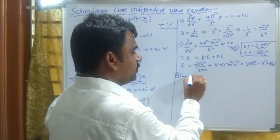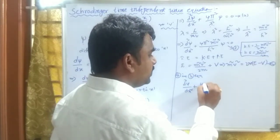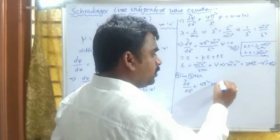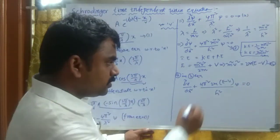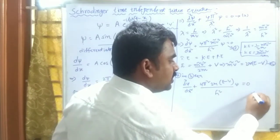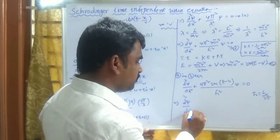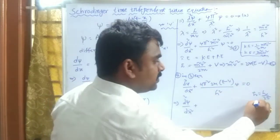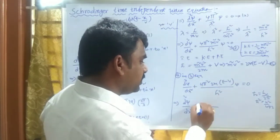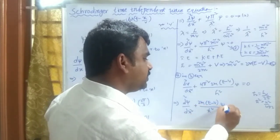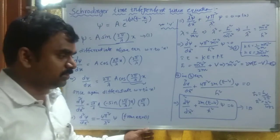Substituting Equation 4 into Equation 3: d²ψ/dx² + (4π²/h²)·2m(E − V)·ψ = 0. Using ħ = h/(2π), so ħ² = h²/(4π²), we can rewrite this as: d²ψ/dx² + 2m(E − V)/ħ² · ψ = 0. This is the one-dimensional Schrödinger time-independent wave equation.